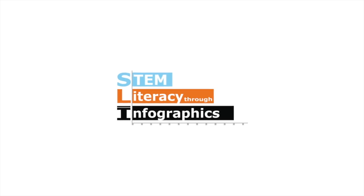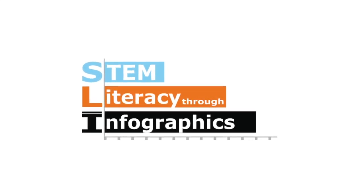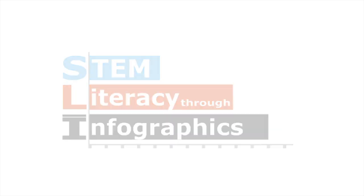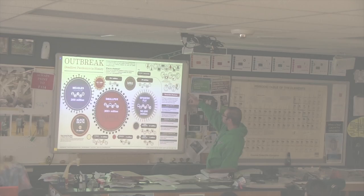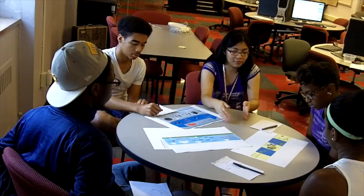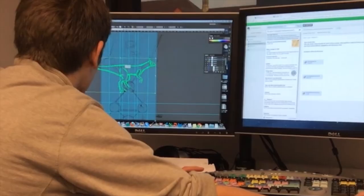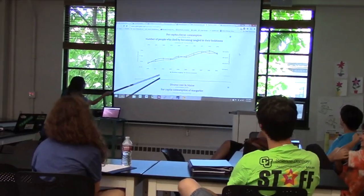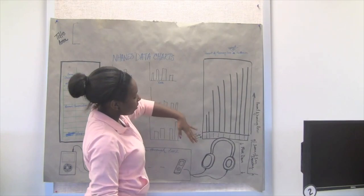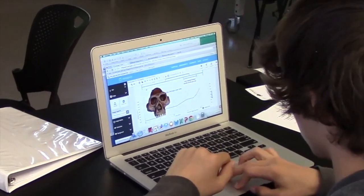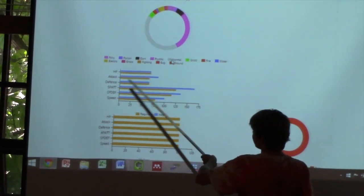In response, we are leveraging the power of science and data journalism to create STEM literacy through Infographics, or SLI. The SLI project is a diverse group of collaborators, including several universities, schools, and informal learning environments in Colorado, Massachusetts, and Missouri. Together we are exploring how to foster authentic context for young adults to create data-driven science infographics using readily available digital tools towards greater science and mathematical literacy.